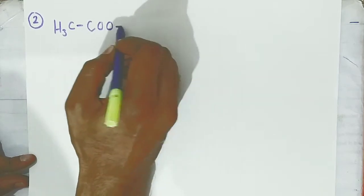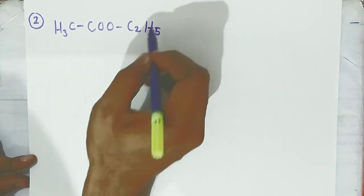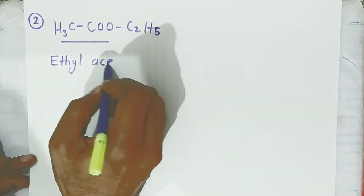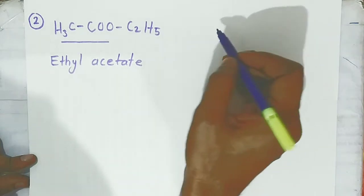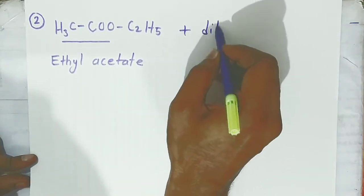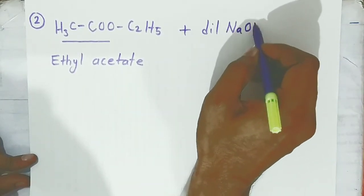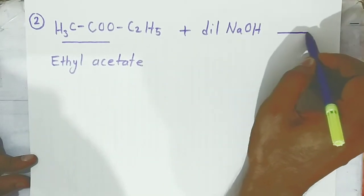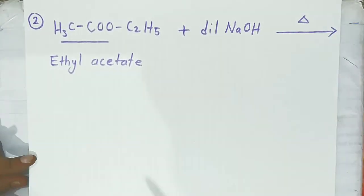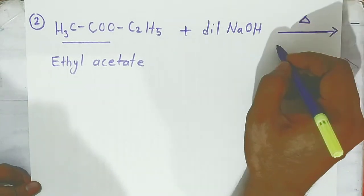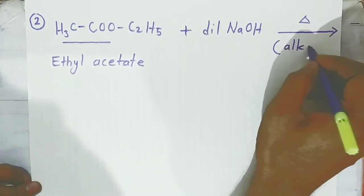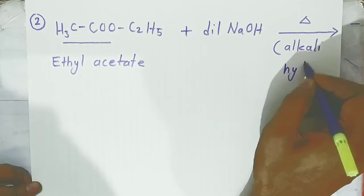Second reaction: you have ethyl acetate (CH3COOC2H5) and you are adding dilute NaOH. NaOH dissolved in water is dilute NaOH. Again you have to heat. Here hydrolysis will take place, but in the presence of alkali. This is called alkali hydrolysis, which is very important.